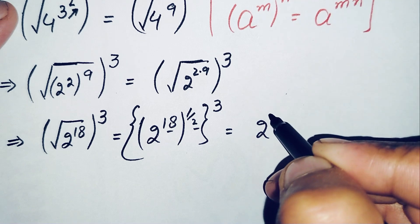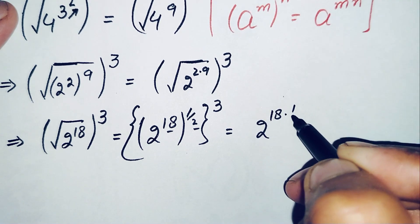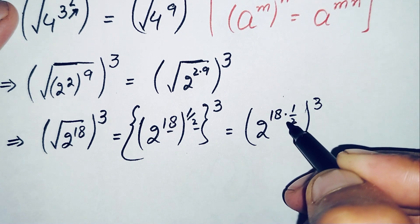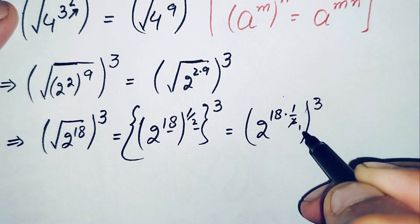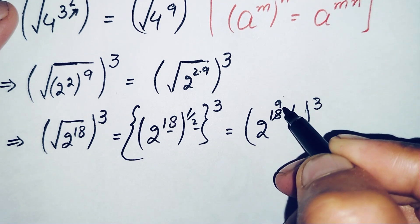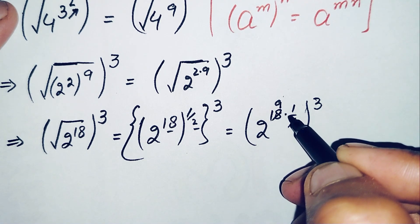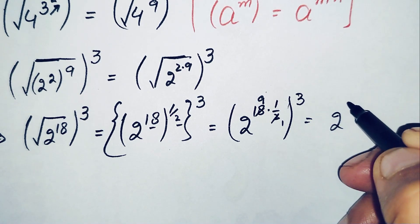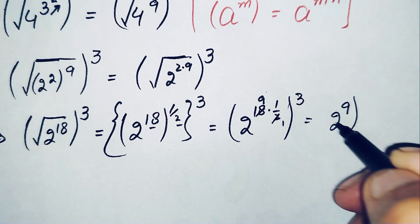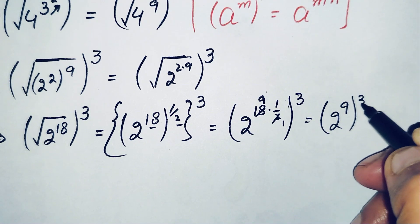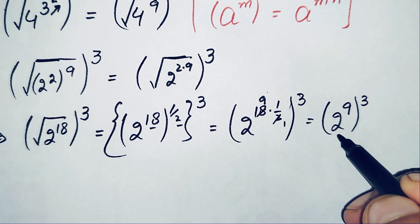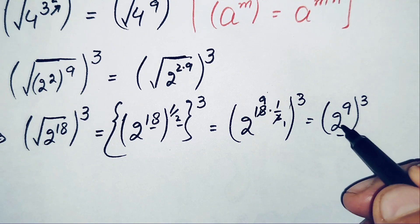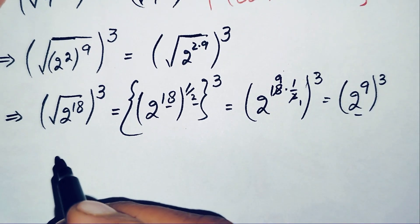That is equal to 2 raised to the power 18 times 1 by 2, raised to power 3. We simplify the powers: 18 times 1 by 2 gives 9. So this becomes 2 raised to power 9, raised to power 3. Now we will try to find the value of 2 raised to power 9, and then we will take the cube of that number.